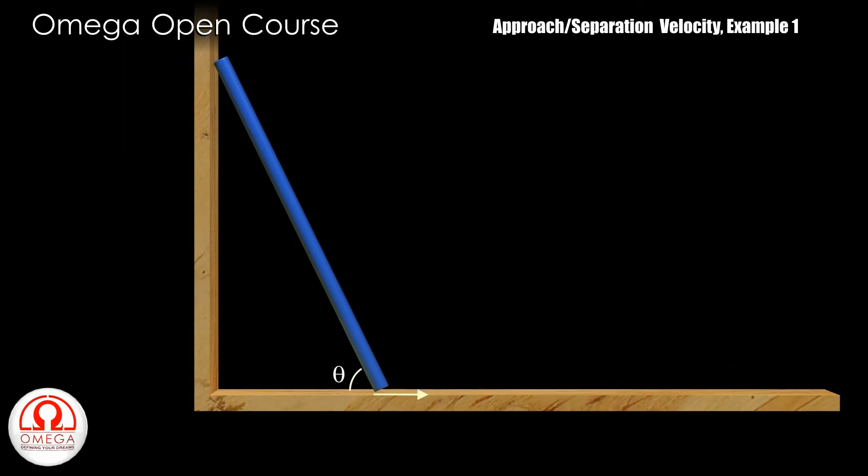Let the speed of the upper end of the rod be v. From geometry we know that the angle between the rod and the vertical wall is 90 degree minus theta. The radial and tangential components of the lower end of the rod are u cos theta and u sin theta respectively.